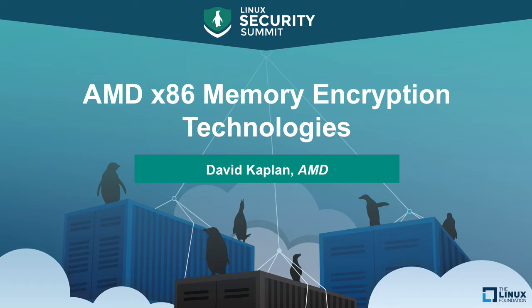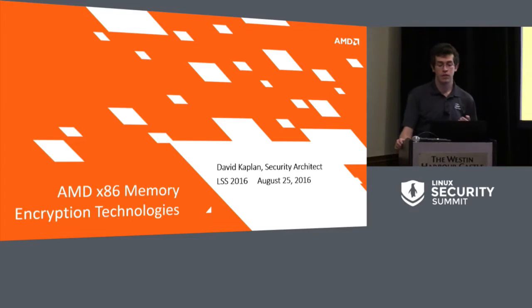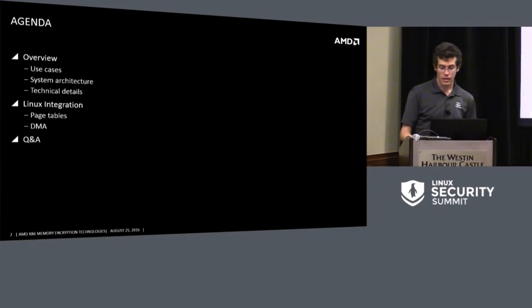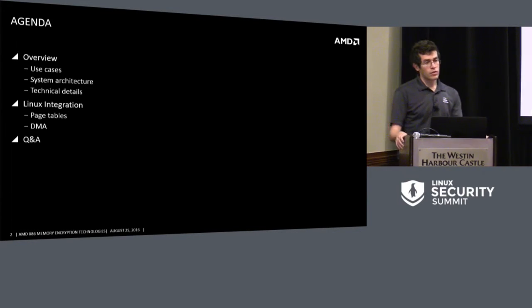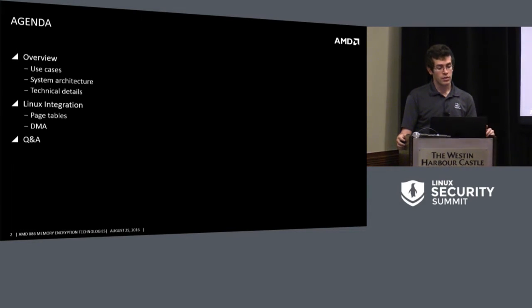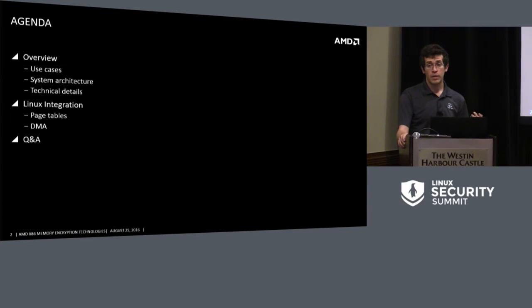My name is David Kaplan, I'm on the security architecture R&D team at AMD. Part of the goal of our team is to define and architect new security solutions for AMD hardware. I'm here today to talk about a few new features we've developed around memory encryption specifically for our x86 chips. I'll introduce the technologies we've developed, talk about the motivation, the hardware details, and how Linux can enable these features.